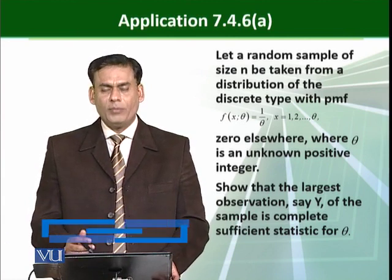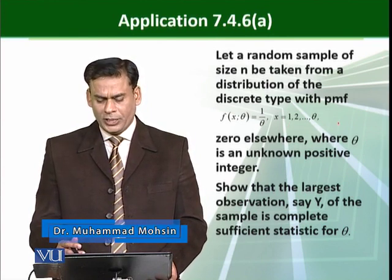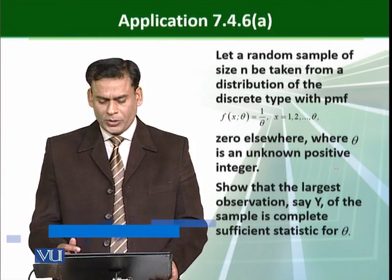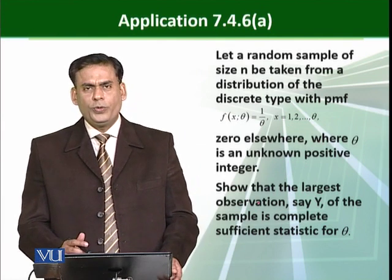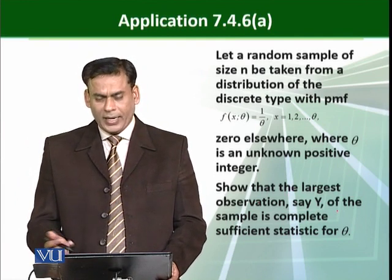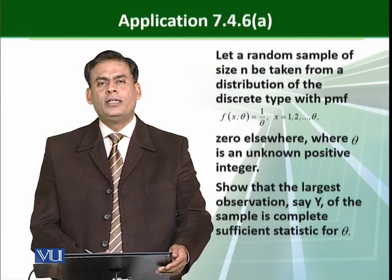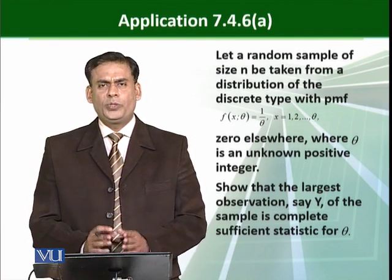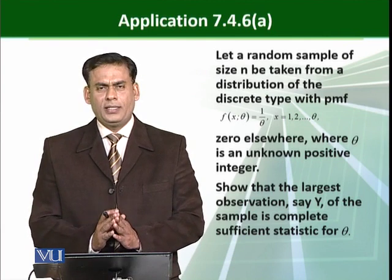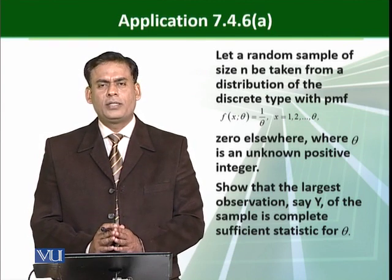The probability mass function is 1 over theta, where x ranges from 1, 2 up to theta, and 0 elsewhere, where theta is an unknown positive integer. We need to show that the largest observation, say Y_n, of a sample is a complete sufficient statistic for theta. So for this discrete type of distribution, we have to show that it is both a sufficient and a complete statistic for theta.